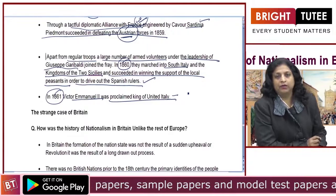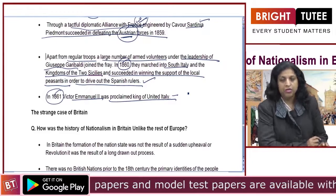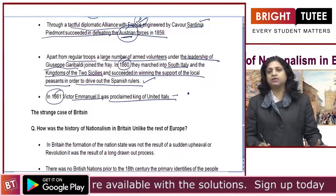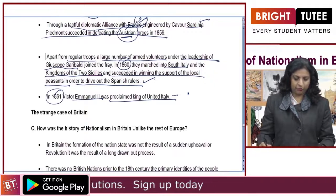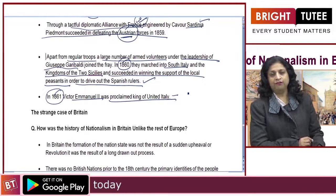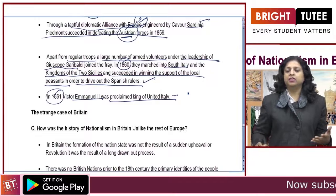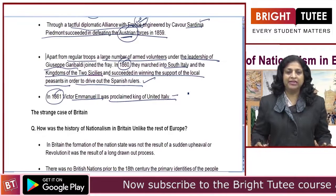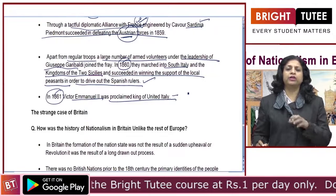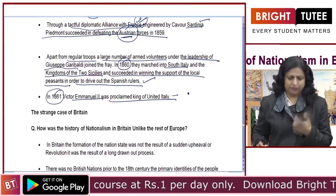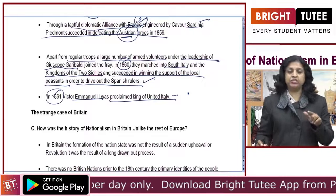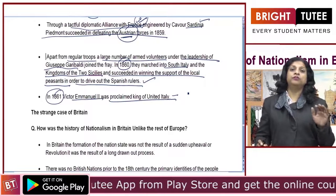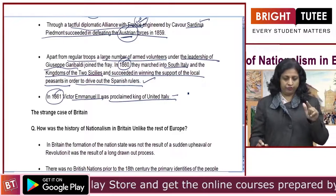After the unification of Germany and Italy, both these countries started their process of development. In their process of development, they made tremendous improvement in industrialization, shipbuilding, etc. They also wanted to have more and more territories under their influence. That is why Italy and Germany became major causes for the beginning of the First World War in 1914.